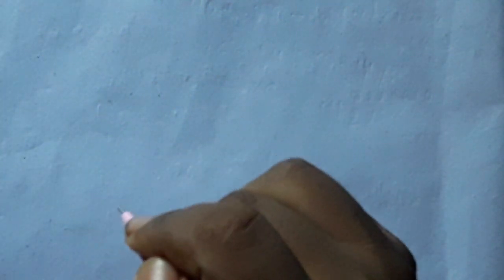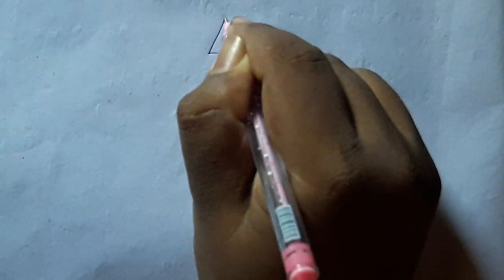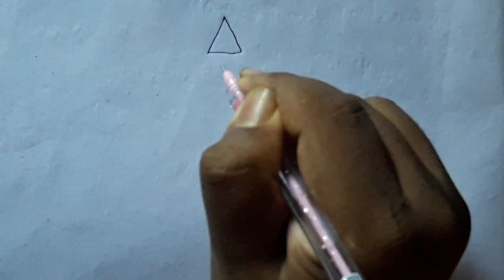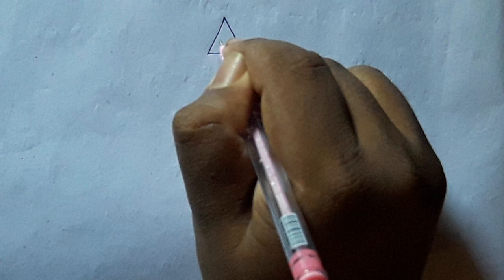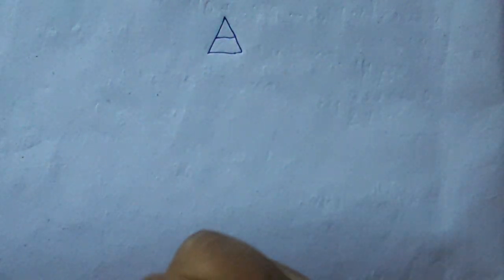I am going to give you the easiest method of remembering the speed, distance, time formulas. You have to watch the whole video. Draw a triangle and divide it into two parts.